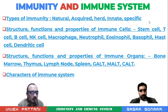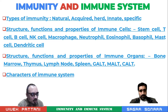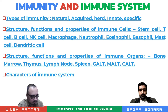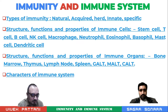The points we are going to discuss today are basically types of immunity such as natural, acquired, herd, innate, as well as specific immunity; structures and functions of the immune cells — stem cells, T cell, B cell, NK cell, macrophages, neutrophils, eosinophils, basophils, mast and dendritic cells.